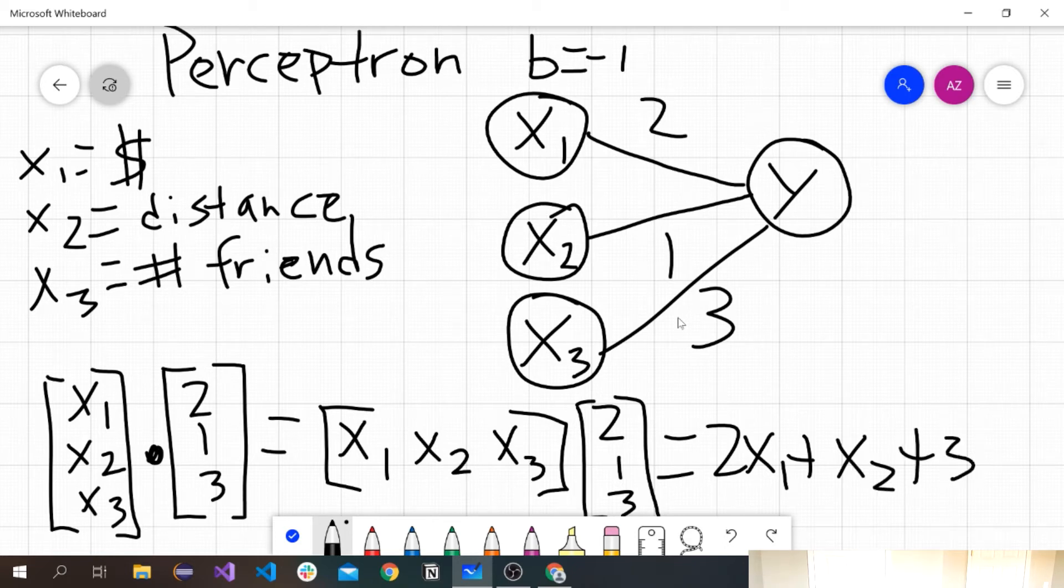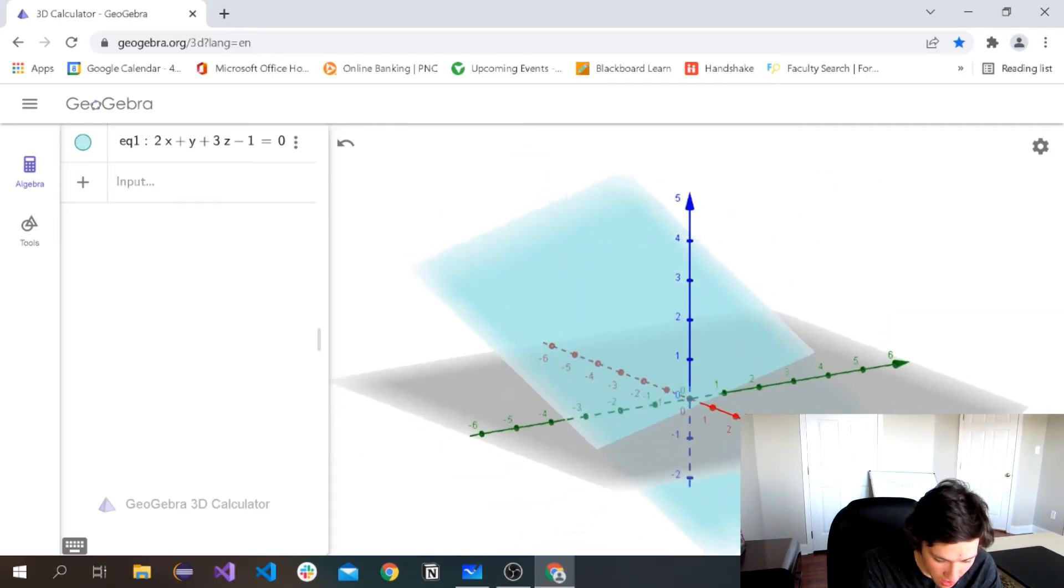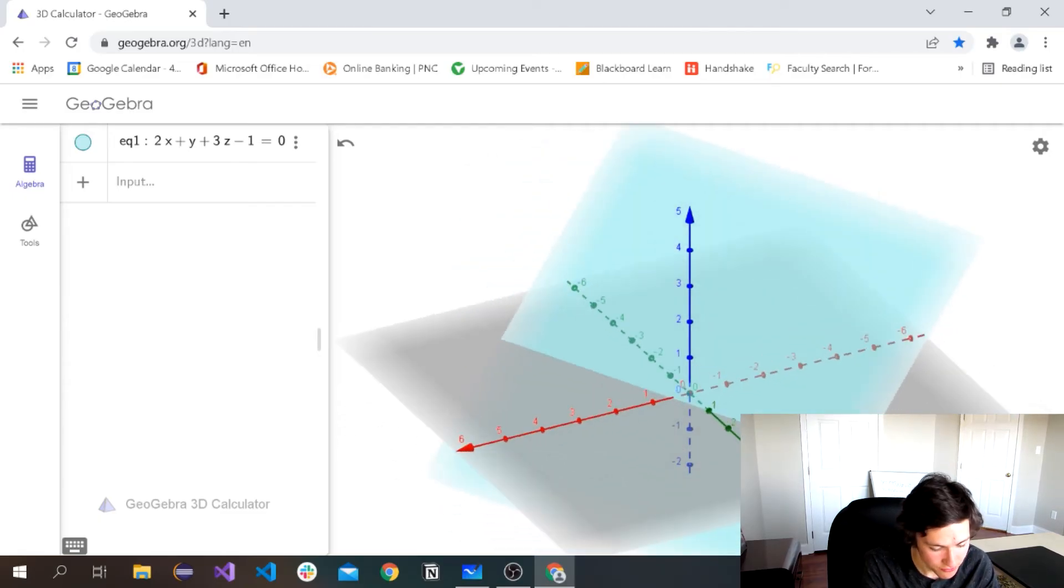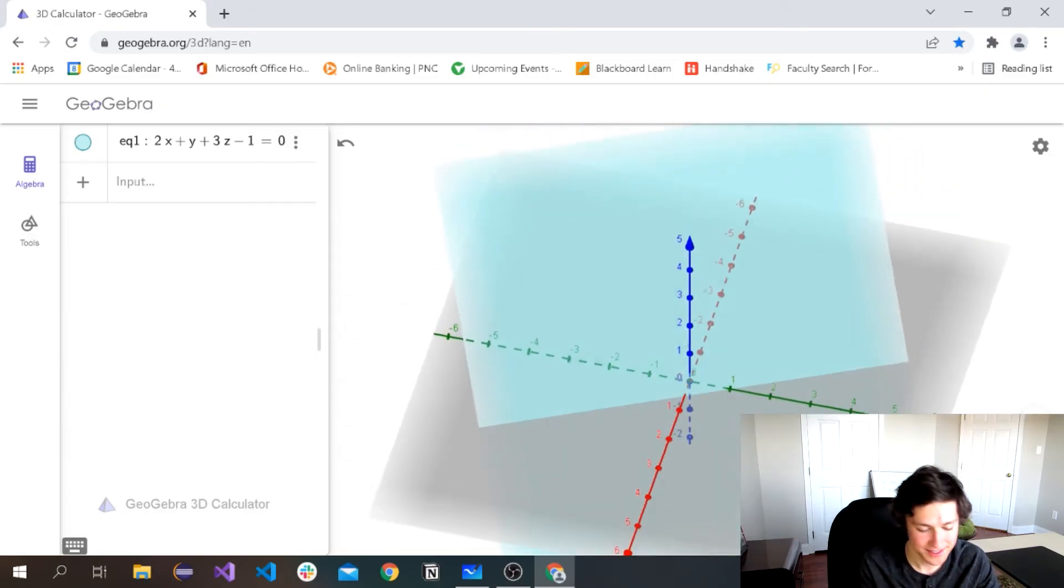And if we change this x1 to x, this x2 to y, this x3 to z, and we actually graph it in 3 space, we get a plane. So what this means is basically if we have red is going to be our amount of money you have, the green is going to be the distance, as long as they're both positive you're going, which makes sense.